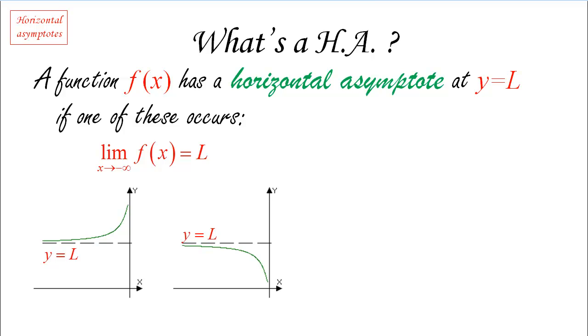Again, intersecting or not intersecting doesn't matter and we're going to revisit that soon. But the important thing is that the curve and the line are becoming closer and closer. Now these are not the only two situations that can happen. We're going to see another one soon. The other limit condition that is associated with a horizontal asymptote is, of course, on the other side.